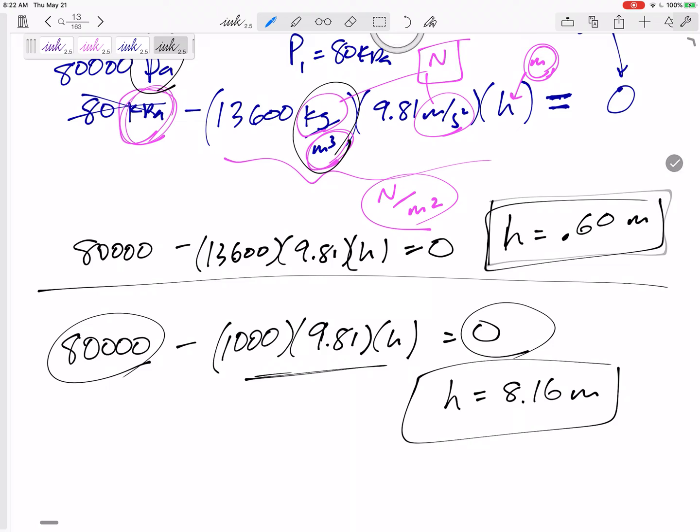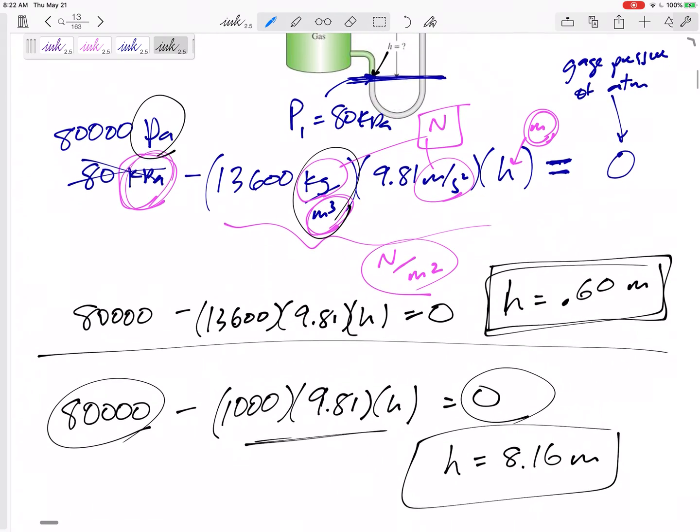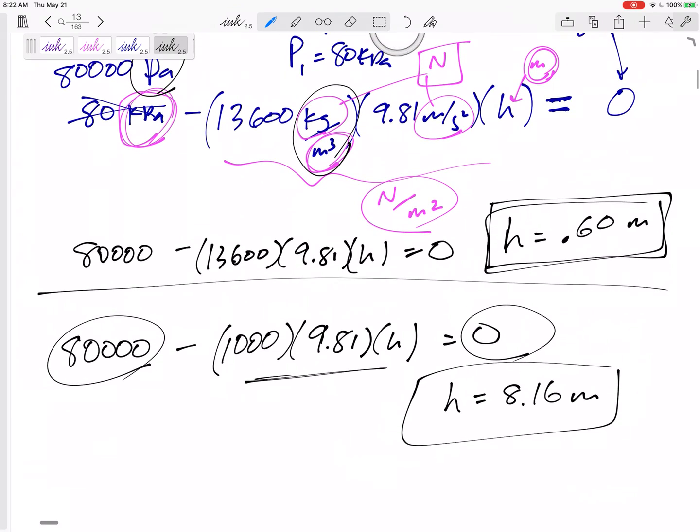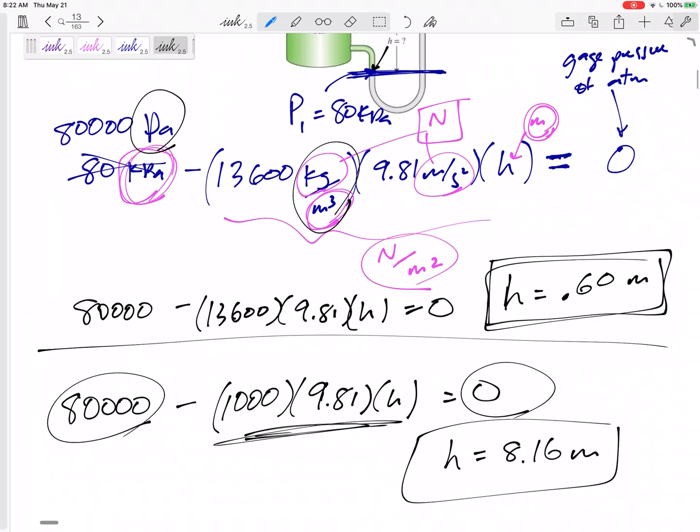Mercury is so dense that you'd only need a small change in height of mercury for 80 kPa. You need a large change in height of water for 80 kPa of water.